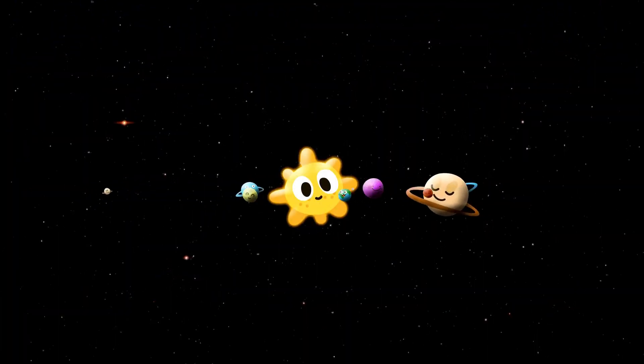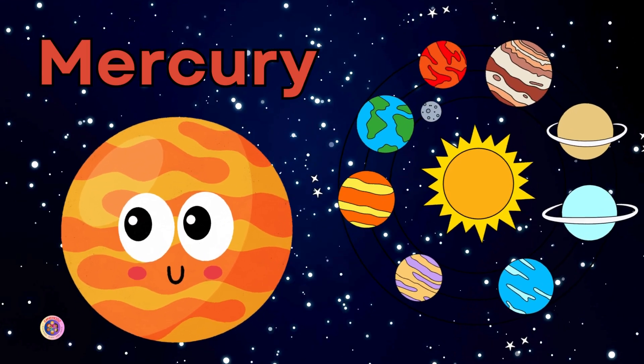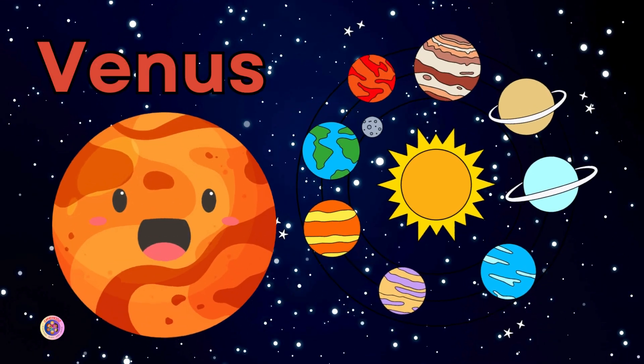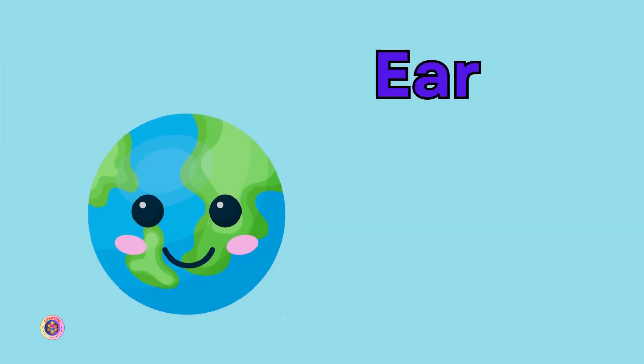Round and round the sun we go. Mercury's the first to show, Venus shines so bright at night, Earth is where we live our life.